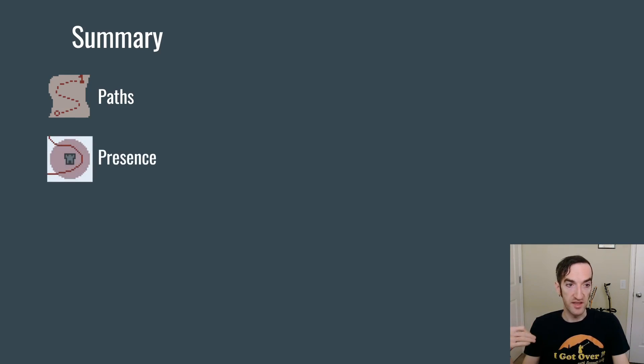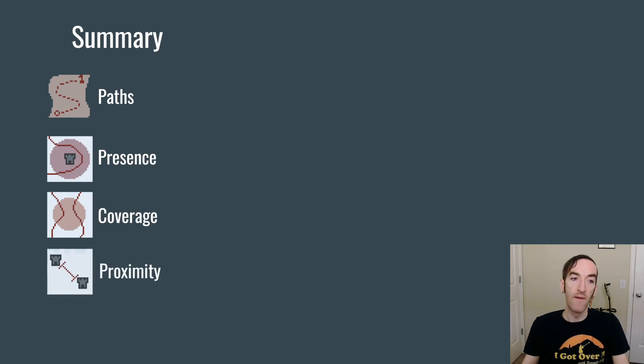I talked about tower placements in terms of a set of power factors, one of which is presence, which is what percentage of time monsters are within range of that tower. Coverage, which is what percentage of monsters that ever exist on the map can be hit by that tower. And proximity, which is how many other tower placements are nearby, allowing you to combo towers together.